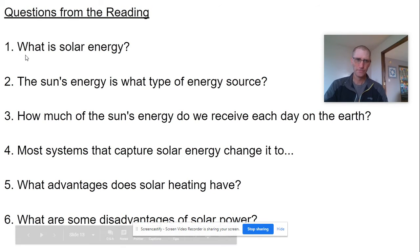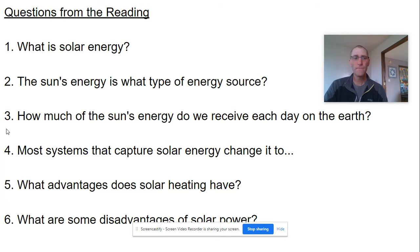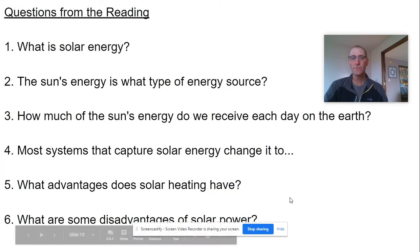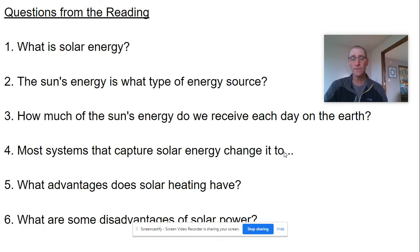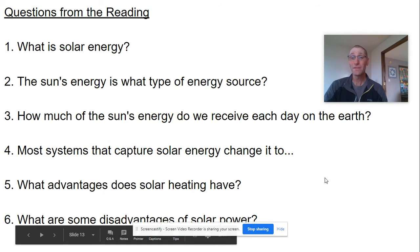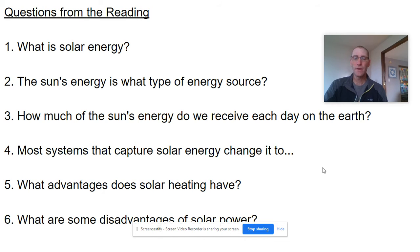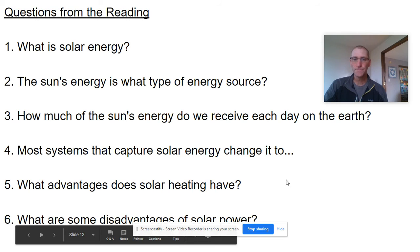Some questions to consider: What is solar energy? It's energy from the sun used for heating and electricity. The sun's energy is renewable — or when it's up, practically inexhaustible. We only receive a tiny fraction of the sun's energy each day. Most systems that capture solar energy convert it to heat or electricity. The advantage of solar heating is no pollutants, and in Wyoming we get reliable sun. The biggest disadvantage is nighttime and cloudiness.